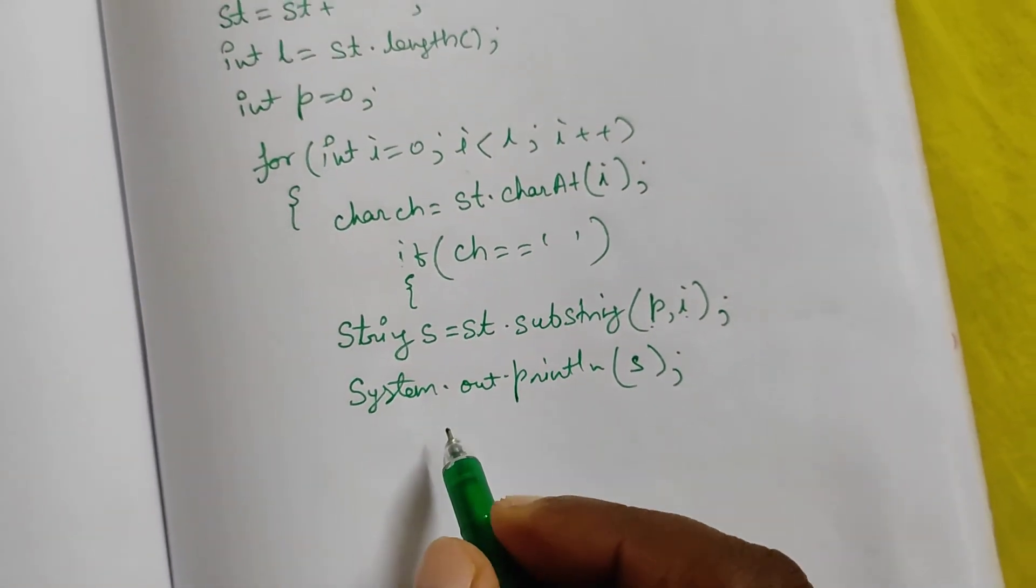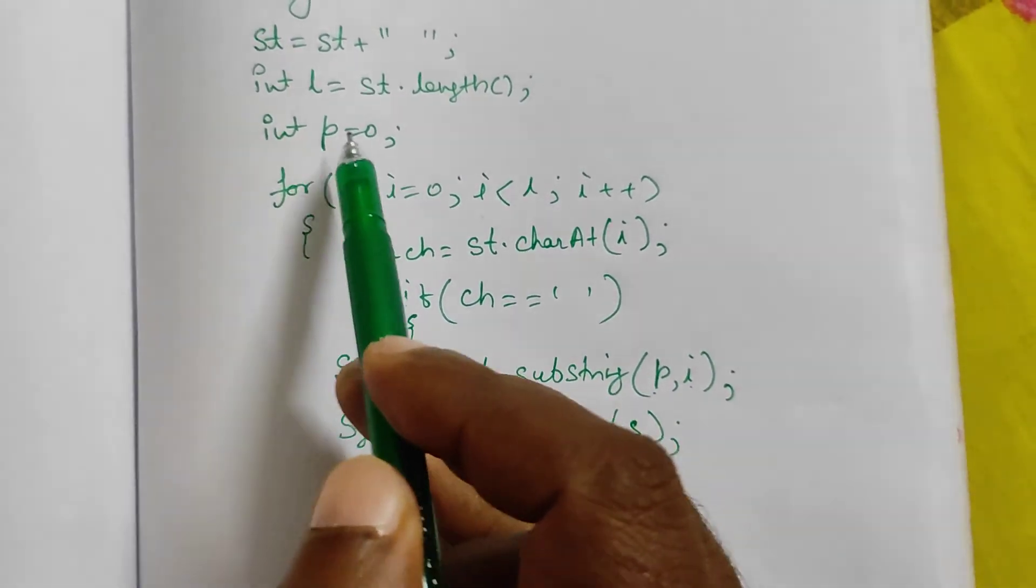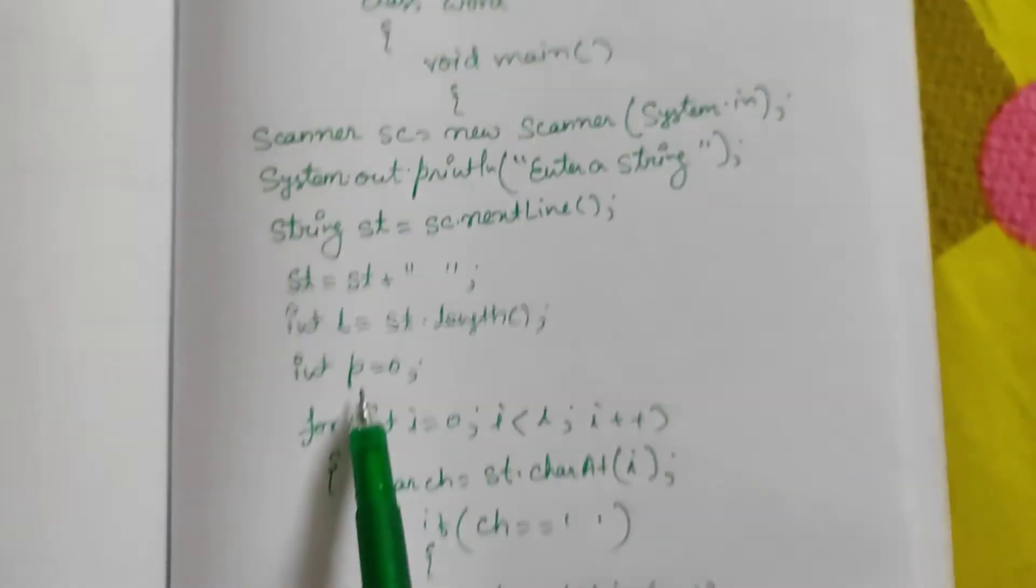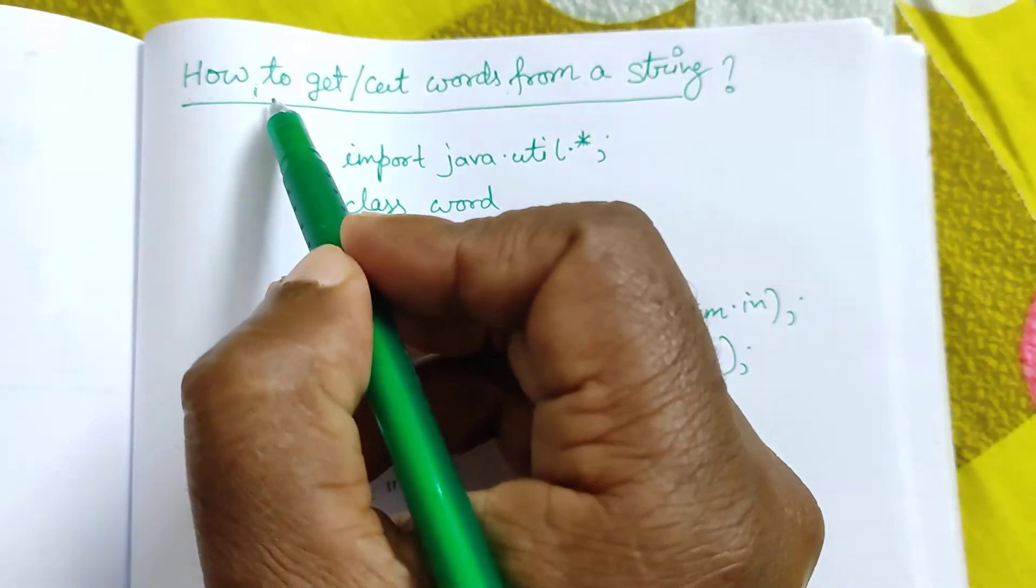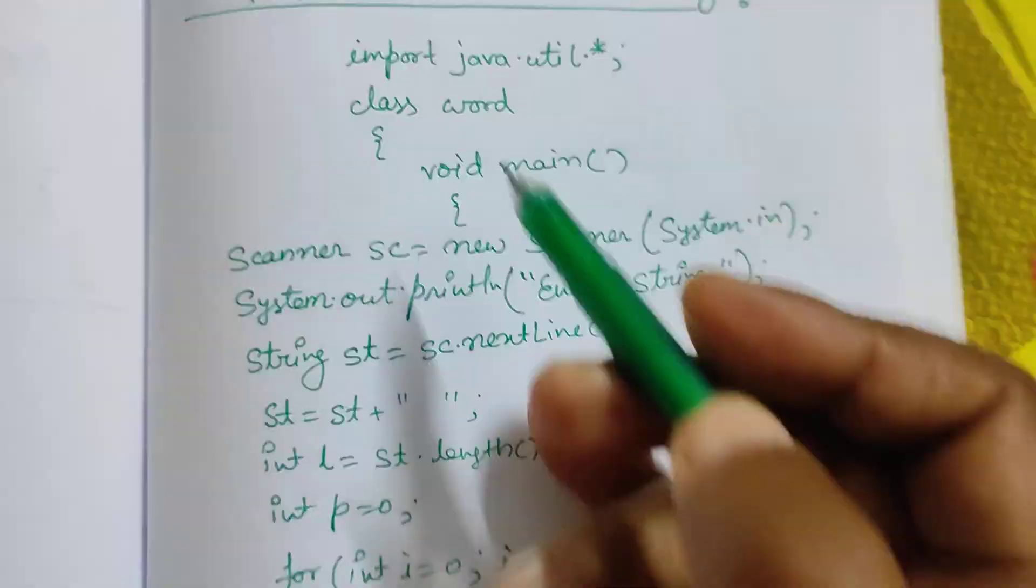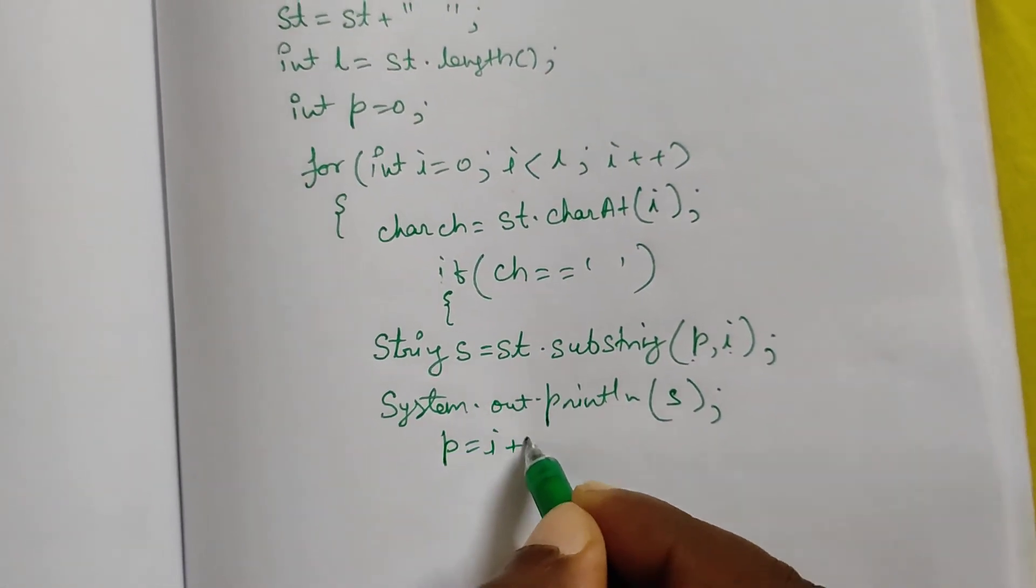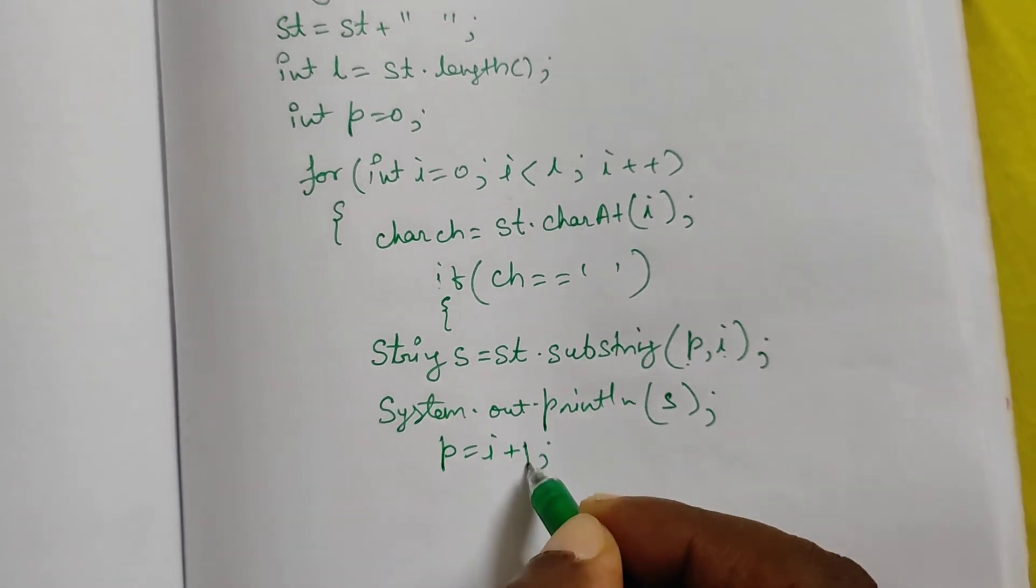After printing, we have to change the position of p. Now the value of p is 0. Starting position p is 0. Now we want this position. So we will write p = i + 1.